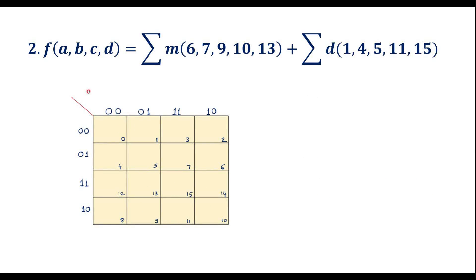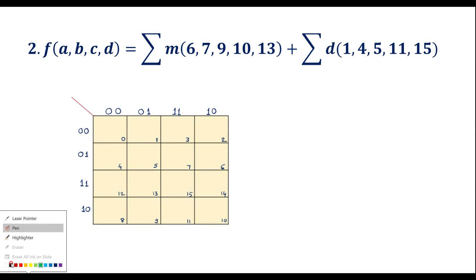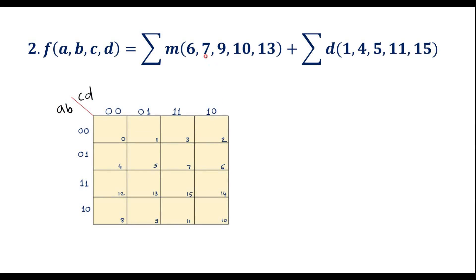Now let me consider the second example. Here we have min terms 6, 7, 9, 10, 13, and these are the don't-care values. Let me write the K-map with axes a, b and c, d. The min terms 6, 7, 9 are identified in their corresponding cells.